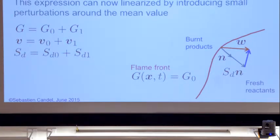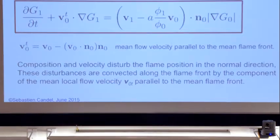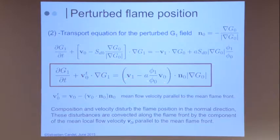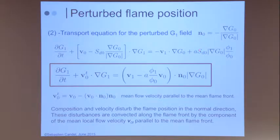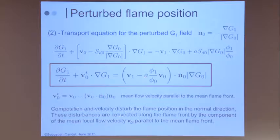The perturbation of the G equation is repeated: the sources of perturbations are the velocity fluctuation and the changes in burning velocity. In a simplified analysis, you can say that the burning velocity perturbation is just proportional to phi1 over phi0, and the proportionality factor is the slope of SL versus phi. The slope A equals 2.3 for example at phi = 0.8.